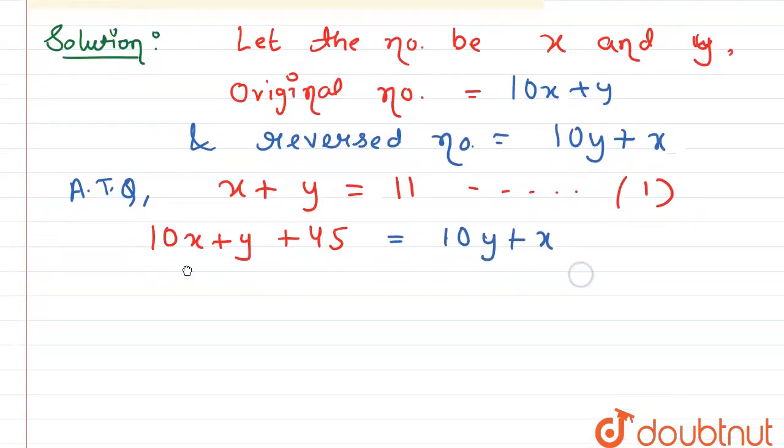So now here, if 10y comes to the LHS it will get subtracted: 10x minus 10y plus y plus x equals minus 45. So now here we see that 10x minus x is 9x, and minus 10y plus y is minus 9y, equals to minus 45.